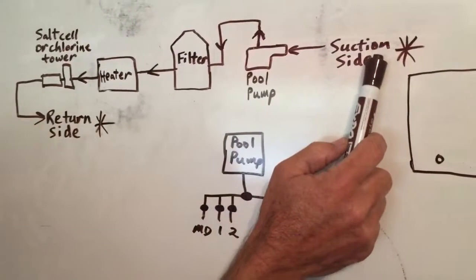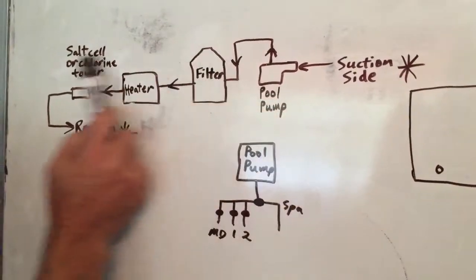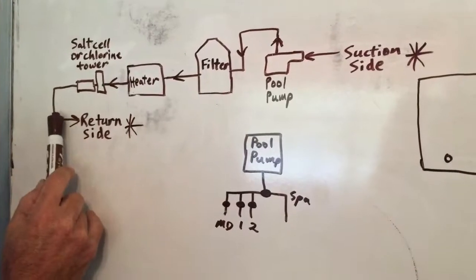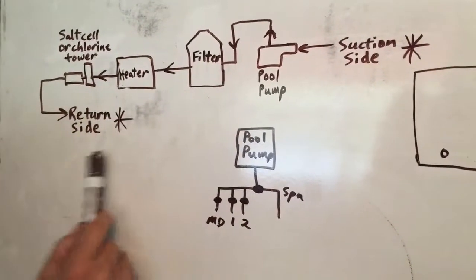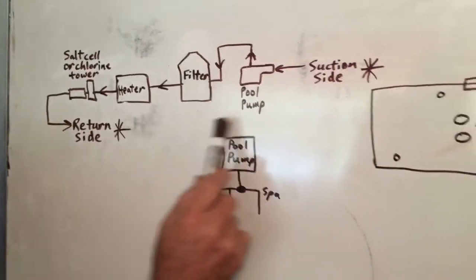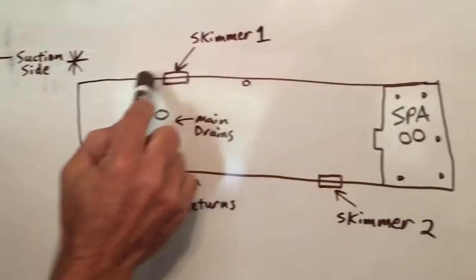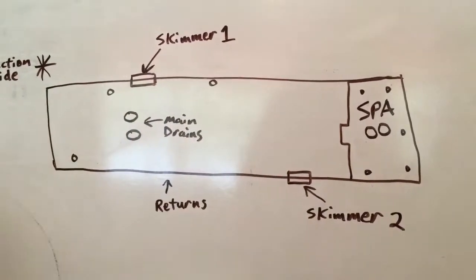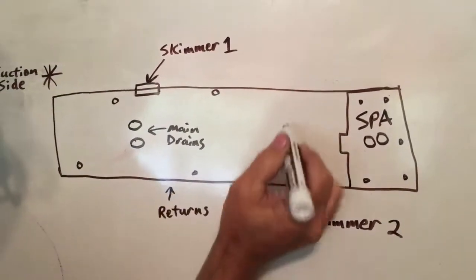This is your suction side into the front of the pump. And then after the heater and the sanitizer, now it's the return side of the plumbing ready to go right back to the pool. And where does it go? It comes back to these pool returns.